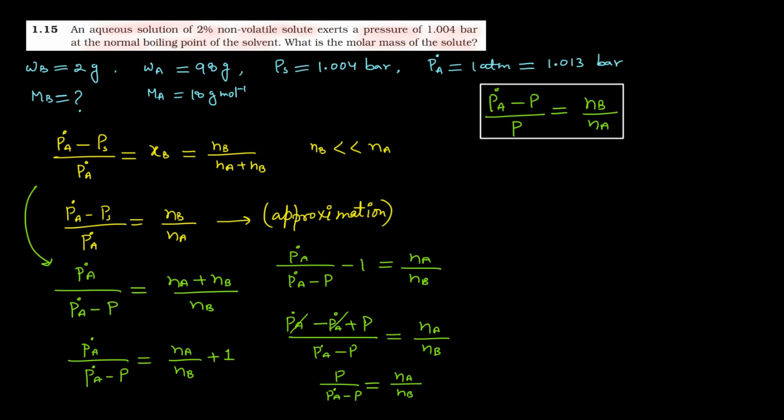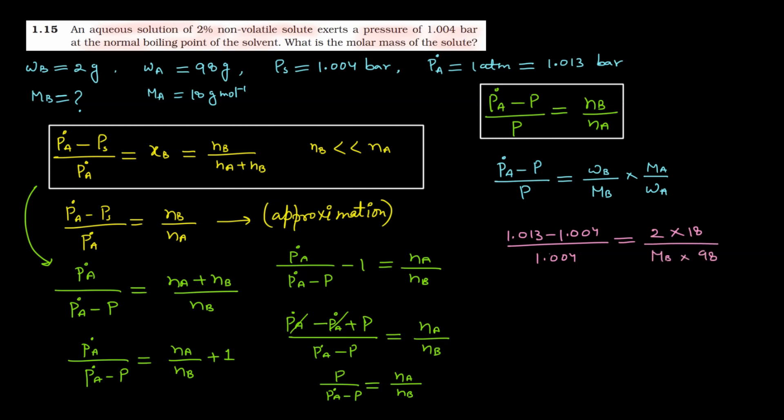You can also use that formula, but there you used approximation, so there will be variation in answer. Now what do we do? Let's simplify this formula a bit more. (p₀ - p)/p equals nb - we can write number of moles of solute as mass of solute divided by molar mass of solute, times number of moles of solvent below, which we write as mₐ/wₐ. Now put values here. What is the value of p₀? 1.013 minus 1.004 whole divided by 1.004 equals wb which is 2 times mₐ is 18 divided by mb which you have to calculate and wₐ is 98.